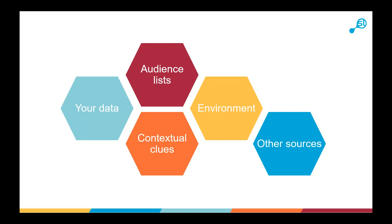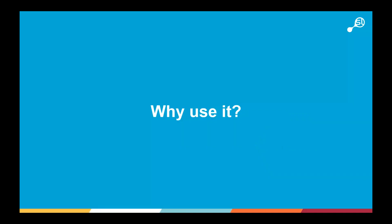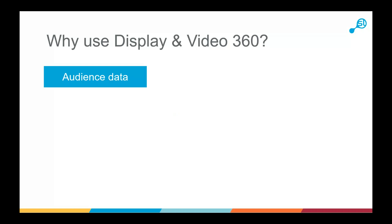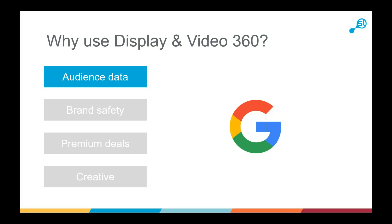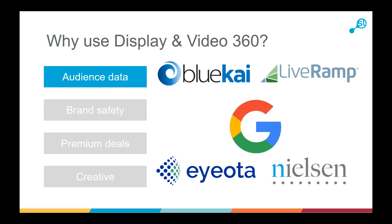Why would you use DV360? We'll focus on four key reasons: audience data, brand safety, premium deals, and creative opportunities. Starting with audience data — Google's audience lists are very extensive, with targeting based on whether someone is generally interested in something versus actively currently searching or engaging with it, through a very powerful custom intent tool. Those familiar with display in Google Ads will recognize some of this, but DV360 also includes a whole series of third-party data partners.